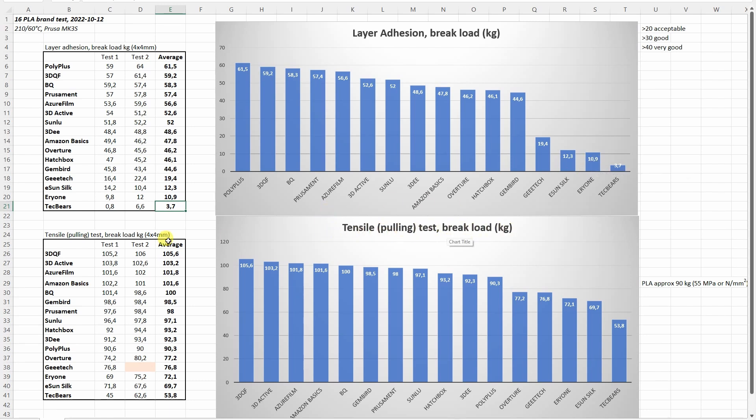About the tensile and pulling test. Again I sort them from the strongest to the weakest and usually my experience is that PLA should break on approximately 55 MPa, that's around approximately above 90 kg. So basically we have a few filaments which are a little bit weaker here and I noticed when they have a weaker layer adhesion usually they perform bad in this tensile pulling test.